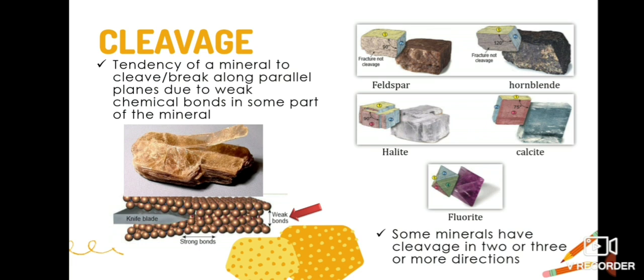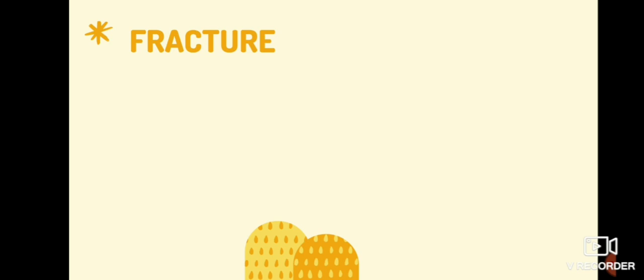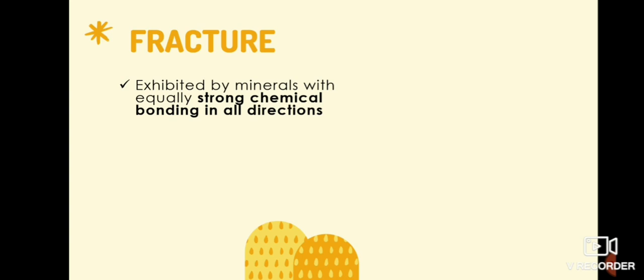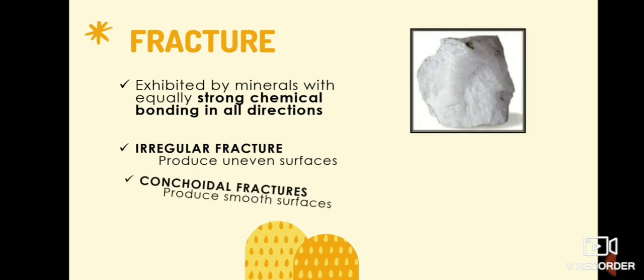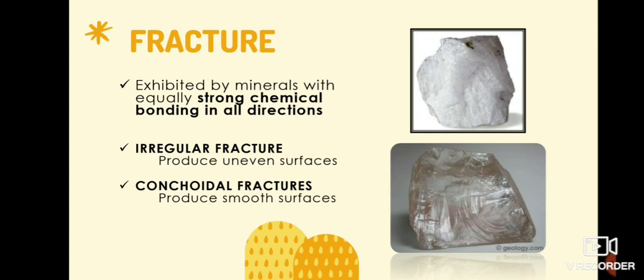The last of the mineral strength is fracture. Fracture is exhibited by minerals which has an equal or nearly equal strong chemical bonding in all directions. Most minerals exhibit irregular fracture and produce uneven surfaces. While some like quartz breaks into smooth curved surfaces resembling a broken glass, exhibits conchoidal fracture.